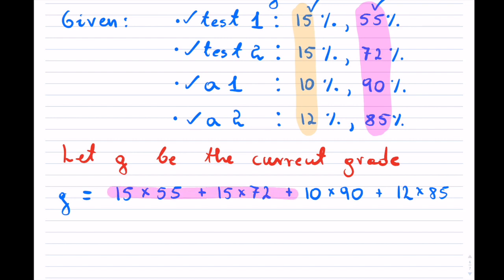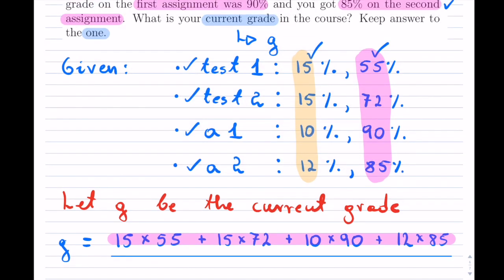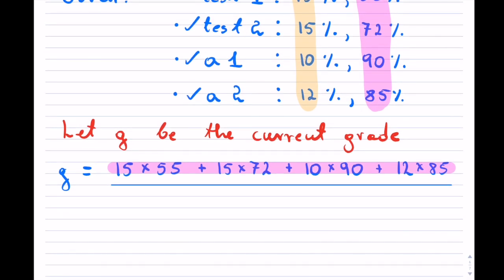This now gives us our total worth of all our tests and assignments so far. And in order to calculate the average, we have to divide. And we always divide by what they are worth. So here we're going to have 15, that's the first test. 15, that's the second. 10,